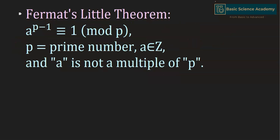According to Fermat's Little Theorem, a to the power of p minus 1 is congruent to 1 mod p, where p is a prime number and a belongs to the integers and a is not a multiple of p.